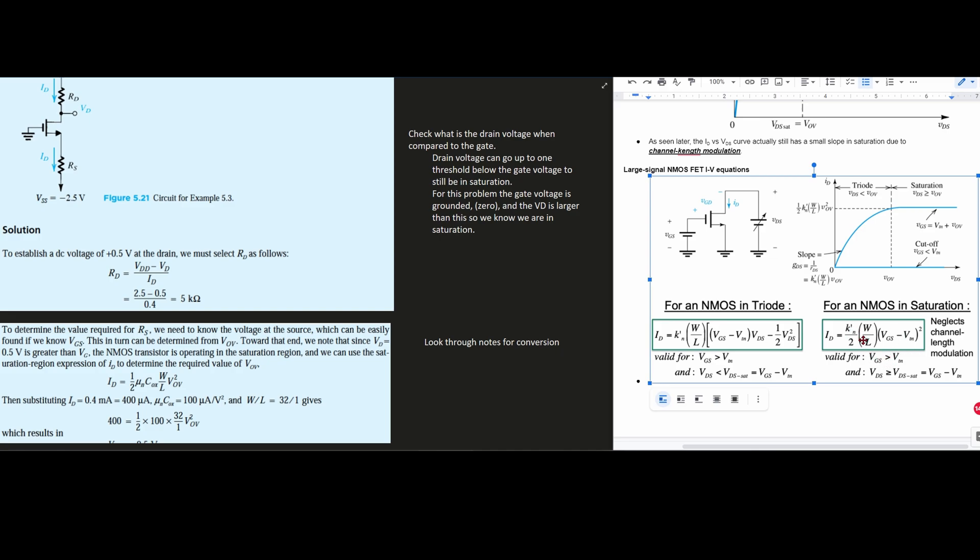Like what's this K apostrophe N? We would have to look in the notes for that. For VGS minus VT or VTN, we can also look in the notes. We know that VGS minus VT is equal to VOV, the overdrive voltage. VGS equals VT plus VOV, so that's just a different way that they wrote it. Using that we're going to substitute VOV in for the VGS minus VTN.